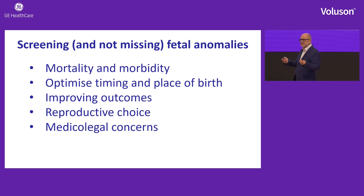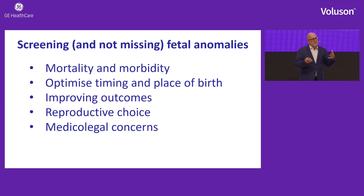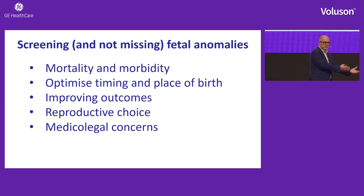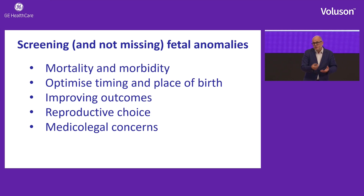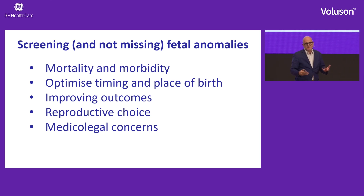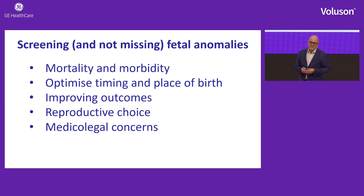Why do we miss abnormalities? The few studies that have looked at this suggest we miss abnormalities because we forgot to look at a particular structure. Usually when a baby is born with a fetal anomaly that was undetected prenatally, you go back to your ultrasound record and find that an image of that particular structure is missing — you forgot to examine it. We're all humans, scanning patient after patient, and there are 20 different images we have to remember to take.